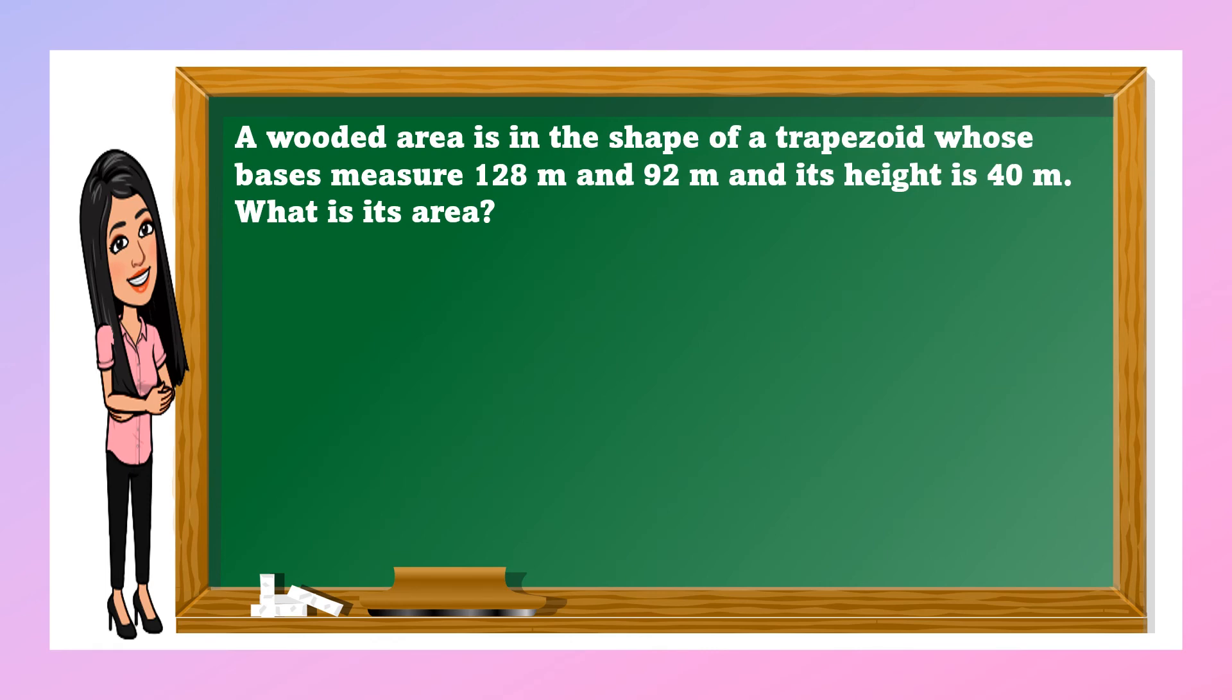A wooden area is in the shape of a trapezoid whose bases measure 128 meters and 92 meters and its height is 40 meters. What is its area? So come to think of it that our figure here is a trapezoid. So think of the formula of the area of a trapezoid. Okay, so what is asked in the problem? The area of the wooden part or the trapezoid.